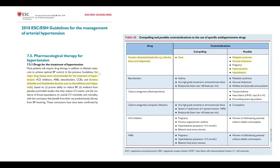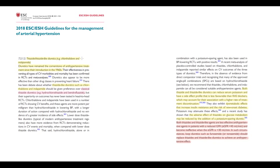Currently, in treatment of hypertension we use five major drug classes, and thiazide diuretics are one of them. Thiazide diuretics remain one of the most effective drugs in treatment of hypertension for years. Thiazide diuretics are subdivided into two types: thiazide-like diuretics such as chlortalidone and indapamide, and classical thiazide diuretics such as hydrochlorothiazide and bendrofluazide.